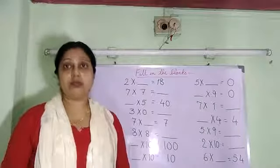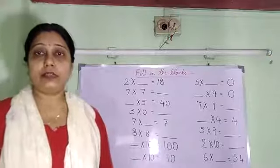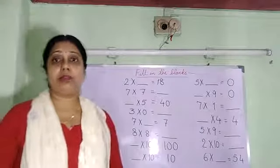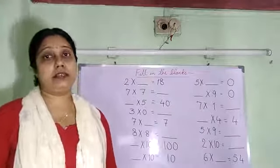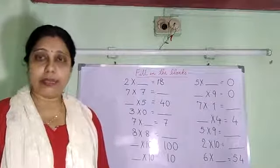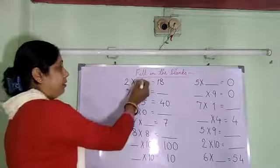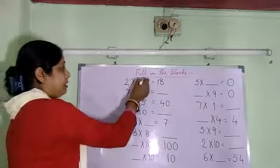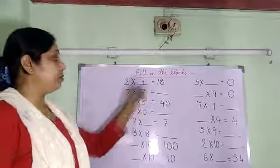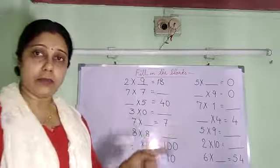We will read the table of 2 until 18 is coming. So: 2 1s are 2, 2 2s are 4, 2 3s are 6, 2 4s are 8, 2 5s are 10, 2 6s are 12, 2 7s are 14, 2 8s are 16, then 2 9s are 18. So what will be the number? 2 9s are 18.